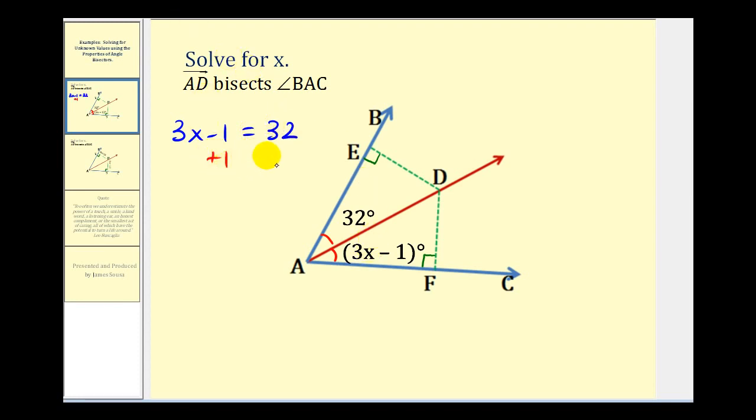So we could add one to both sides. So we'd have three x, this would be zero, this would be 33. So now we can divide both sides by three. X is equal to 33 divided by three, so x is equal to 11.